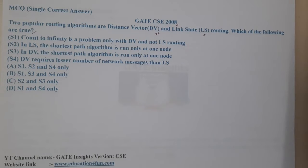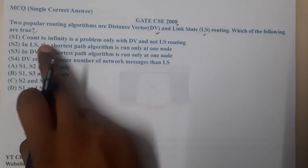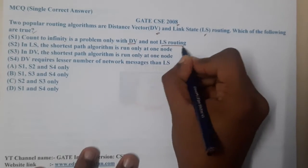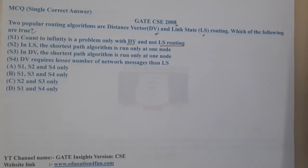Let's go through the options. Option S1 says that count to infinity is a problem only in Distance Vector routing and not in Link State routing. Is it true? Yes, it is 100% true.